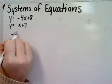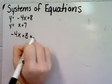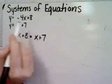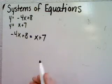First, set negative 4x plus 8 equal to x plus 7. So we set the two halves of the equations equal to each other.